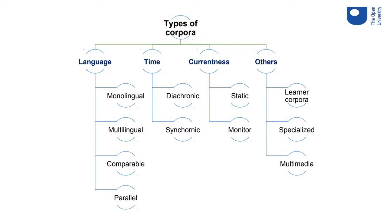Learner corpora are compiled using texts from language students — oral or written. Specialised corpora may contain particular oral features or a particular variety that specialists want to study. And nowadays there are multimedia corpora that include written texts, audio, and video. These categories all interact: for example, you can have a monolingual Spanish corpus that is synchronic, acts as a monitor corpus by continuously adding texts, and is multimedia because it includes written, audio, and video content.